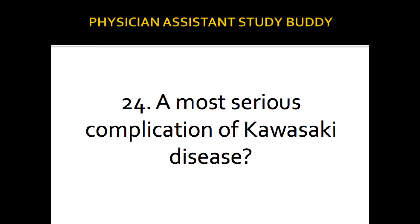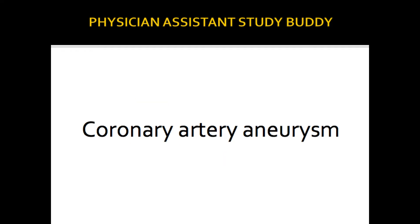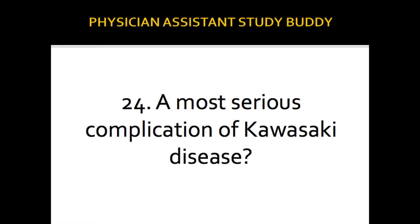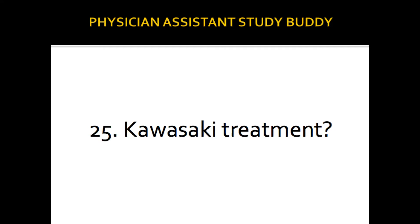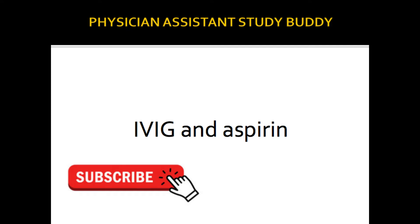The most serious complication of Kawasaki disease: coronary artery aneurysm. I've seen this question several times — it's always about a kid with fever for a week, and they ask what the most concerning thing is. Your answer should be coronary artery aneurysm. Kawasaki treatment: IVIG and aspirin.